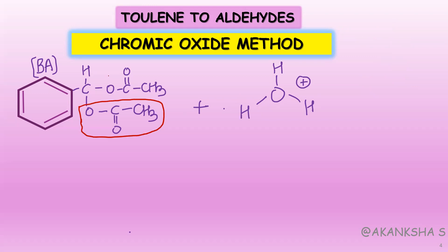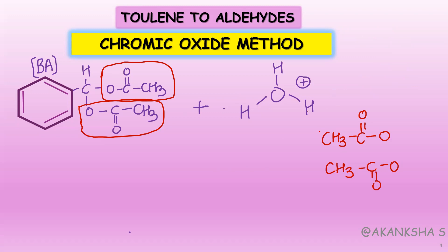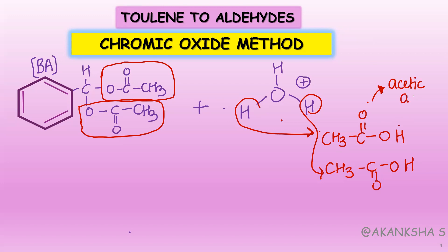When benzylidene diacetate is treated with protonated water (H3O⁺), one hydrogen from H3O⁺ adds to each of the two acetate groups. Adding one hydrogen to each acetate — CH3–C(=O)–O⁻ + H⁺ — gives acetic acid. So both diacetate groups leave as two molecules of acetic acid, a good byproduct.